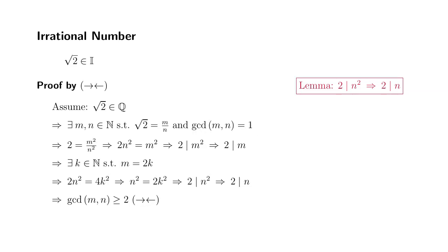Therefore, by proof by contradiction, we know that the square root of 2 is an irrational number. That's it. I hope that this was clear.